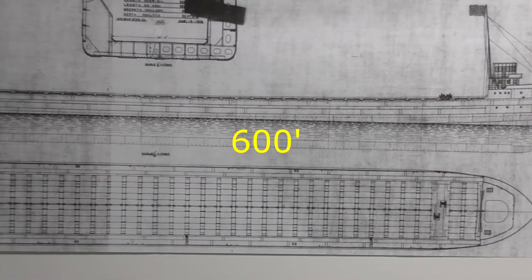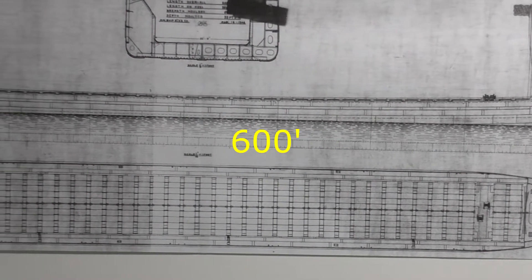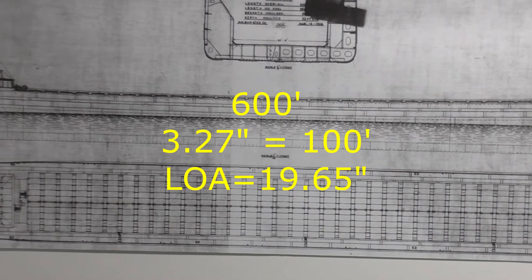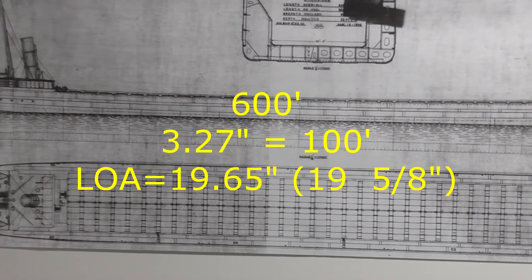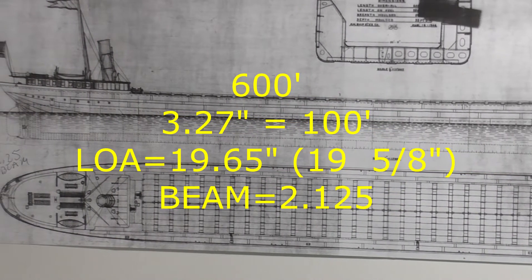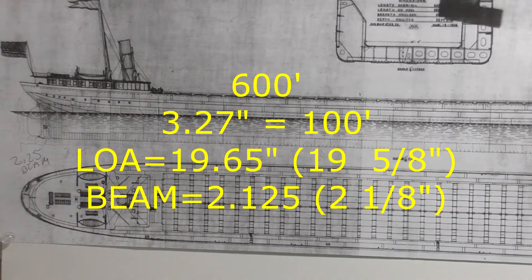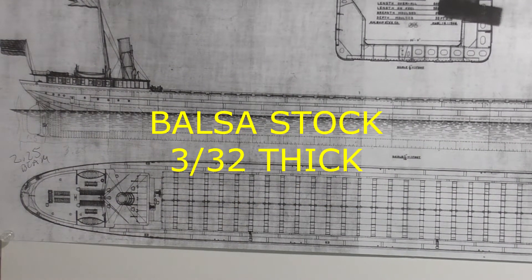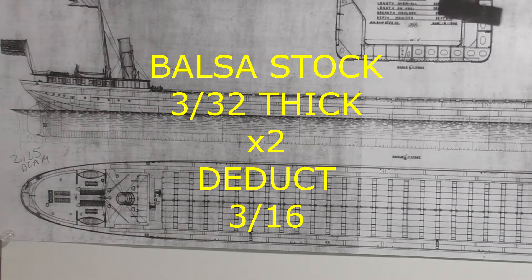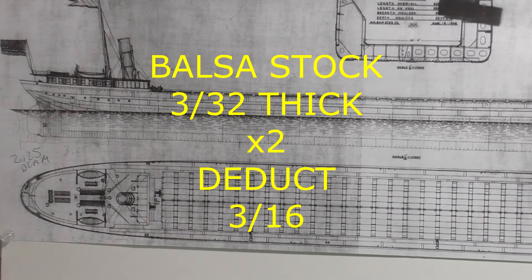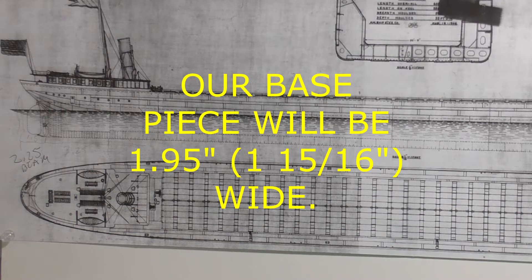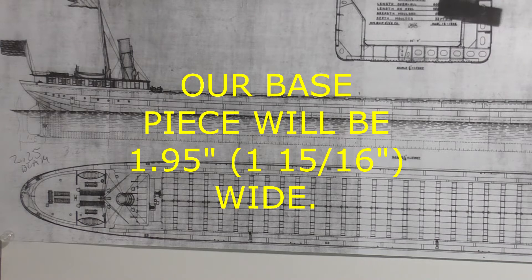Our boat will be a 600 footer circa 1906 to 1911, scale 3.27 equals 100 feet. Overall length 19.65 inches or 19 and 5/8 inches, beam 2.125 inches or 2 and 1/8 inch. But our balsa stock is 3/32 of an inch thick on each side, so we have to deduct 3/16 inches from the overall bottom cut, thus leaving our base piece being 1.95 or 1 and 15/16 inches wide.